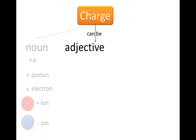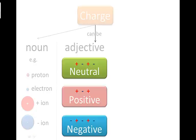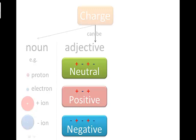The word charge can also be an adjective. In other words, it describes what something is like, what an object is like. An object might be neutral, positive or negative. If it's neutral, then it has just as many protons in it as it has electrons. If it's positive, it has more protons than electrons. And if it's negative, then it has more electrons than protons.